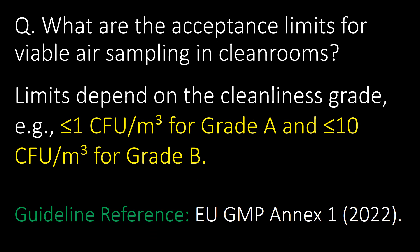Very important question: what are the acceptance limits for viable air sampling in clean rooms? Limits depend on the cleanliness grade. For example, less than 1 CFU per cubic meter for Grade A and less than 10 CFU per cubic meter for Grade B. Guideline reference: GMP Annex 1.